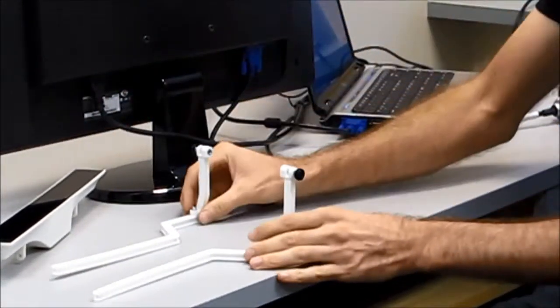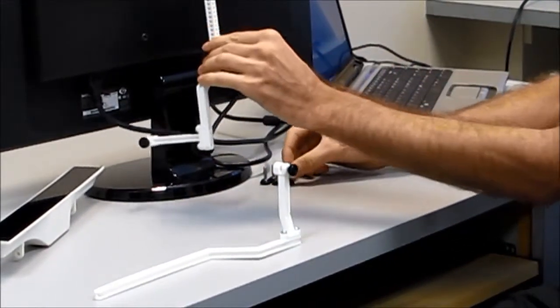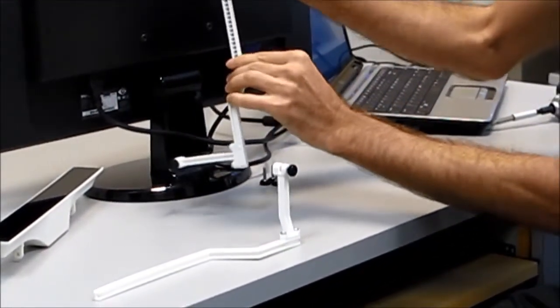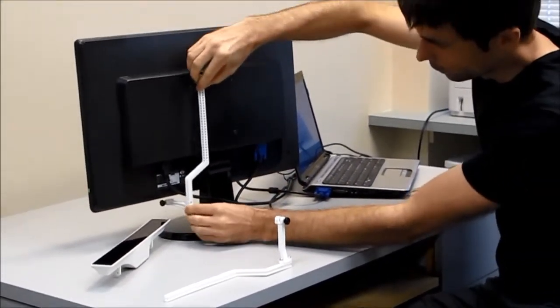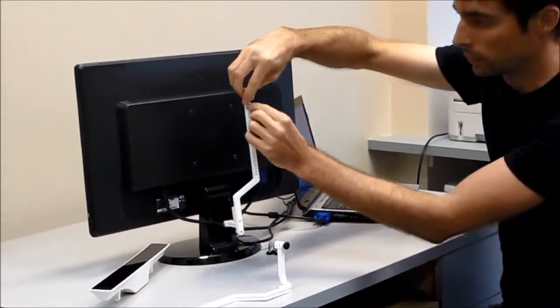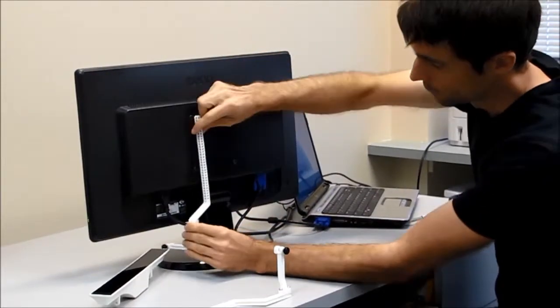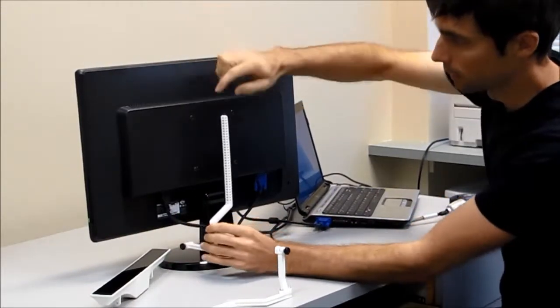To mount it to the display you just take one of these thumb screws and drop it through. You might have to try a couple of different hole spacings, that's why we have so many different spacings here. That lets you adjust it up and down depending on the size of your display.